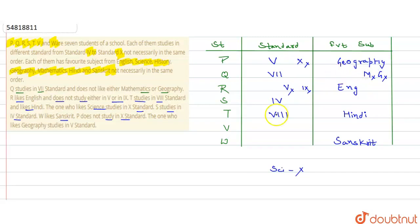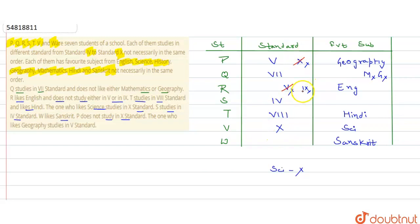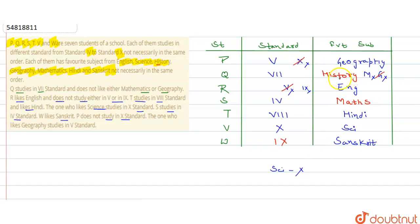अब हमें जो information given थी उसके हिसाब से table fill हुआ. R के लिए: 5th हो गया, 9th नहीं — 5th पहले ही fill है, 10th भी जा चुका है, तो R के लिए 9th बचता है. Subject में Maths बचा है — Geography यहाँ आ गई, Maths यहाँ नहीं आ सकता, तो Maths V के पास जाएगा. जिसे Science पसंद है वो 10th में है — तो V 10th में है और V को Science पसंद है.